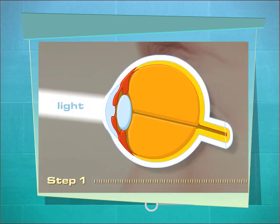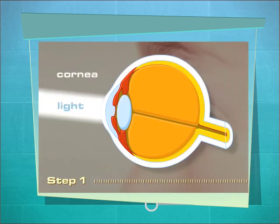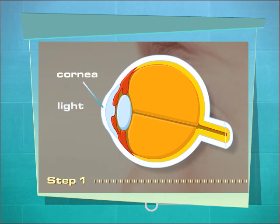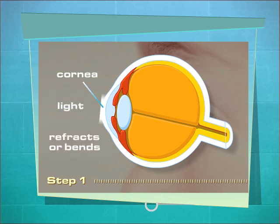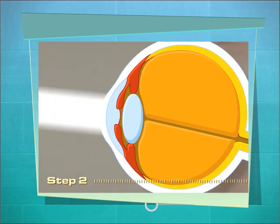When light first enters the eye, it passes through the cornea, a fixed lens, which refracts or bends the light.